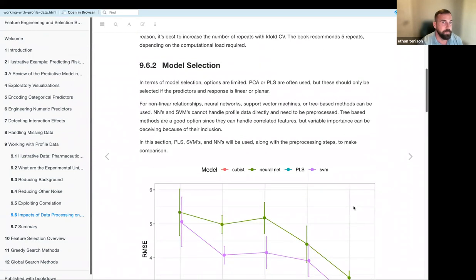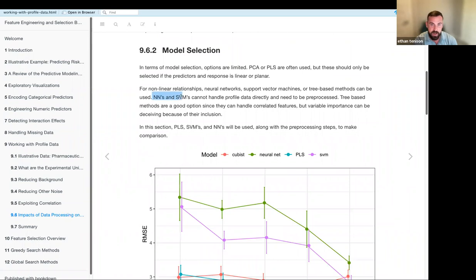In terms of model selection, there are essentially four that they mention. The first two PCA and PLS are often used because of their ability to get rid of the correlation, right? But these only work if the relationship between the predictors and the response is linear or planar. It's not going to be good if you have a lot of non-linear trends. So for non-linear trends, they recommend neural networks, support vector machines, or tree-based methods. It should also be noted that neural networks and SVMs are going to need a lot of pre-processing steps, whereas the tree method will not.